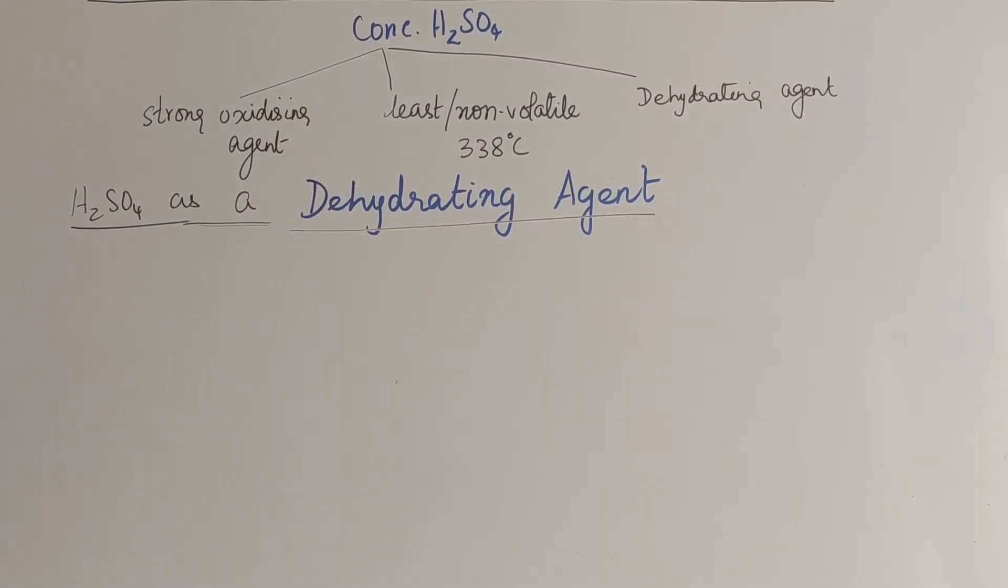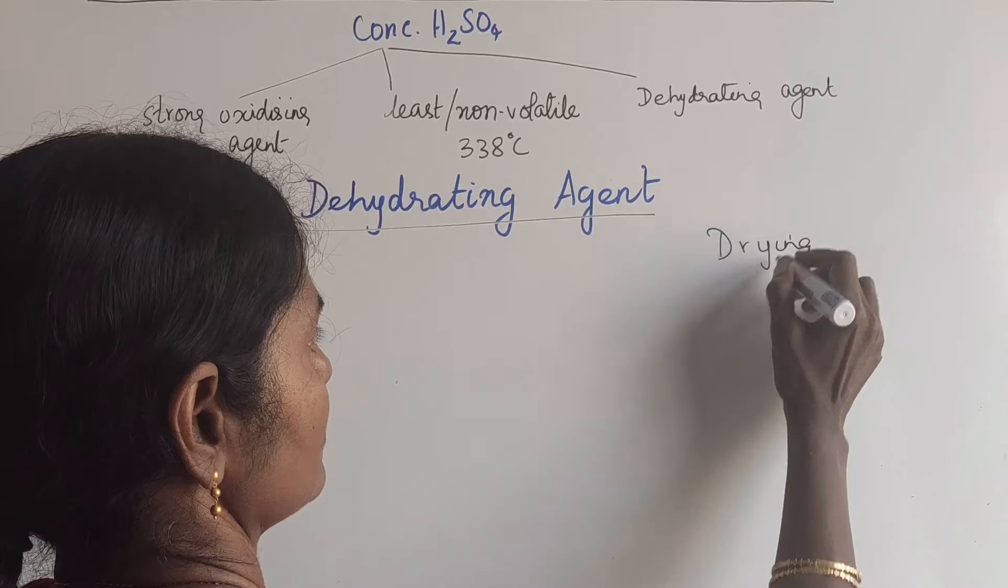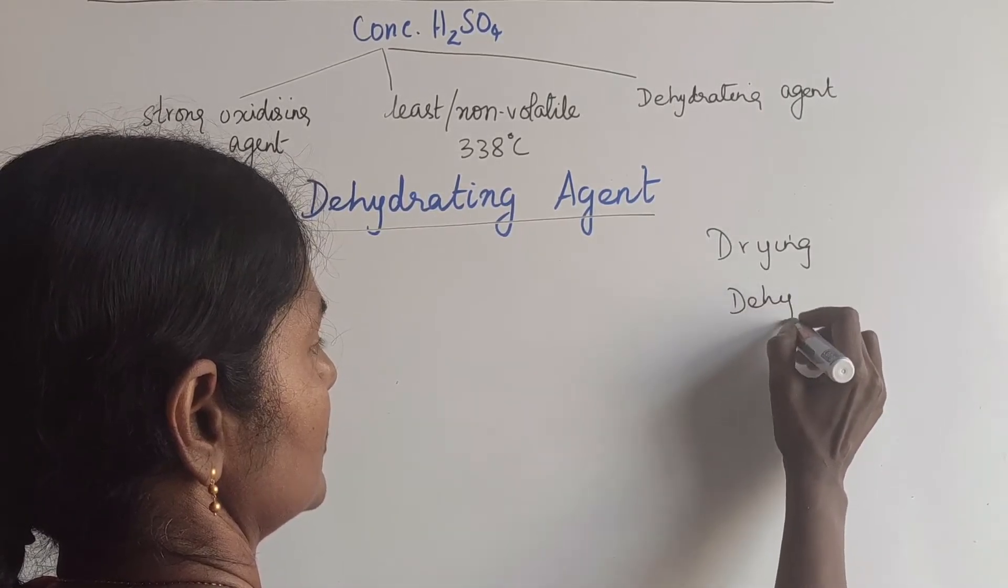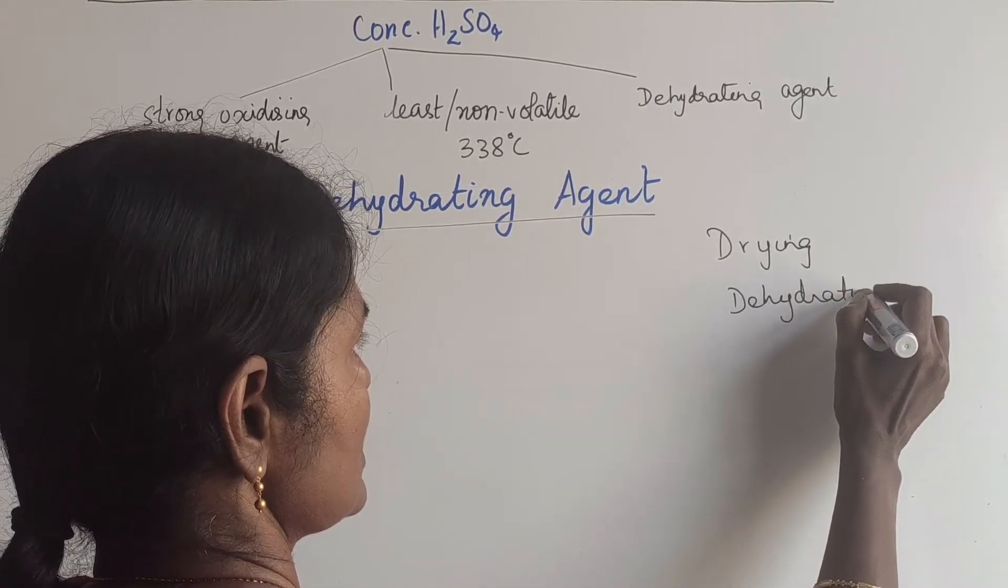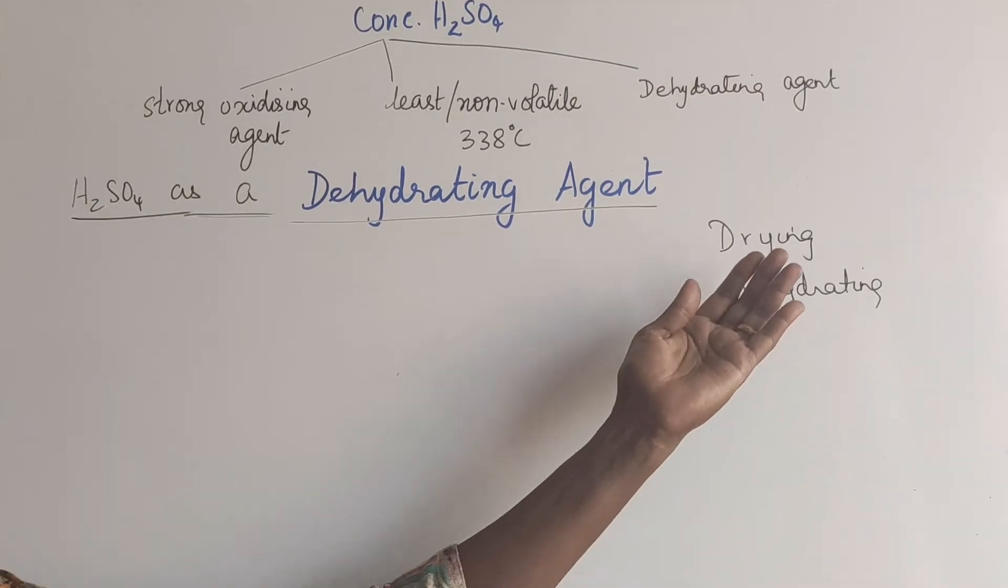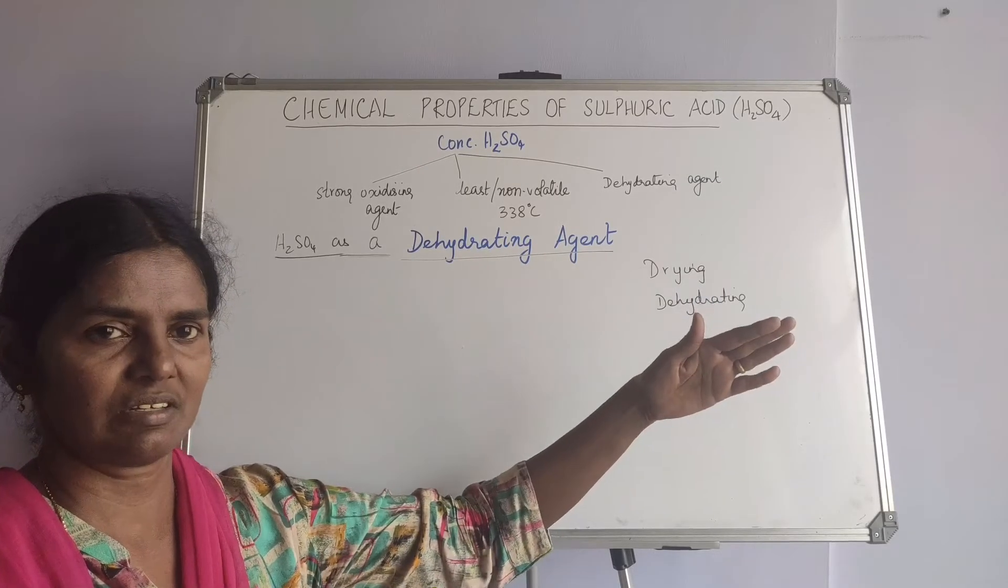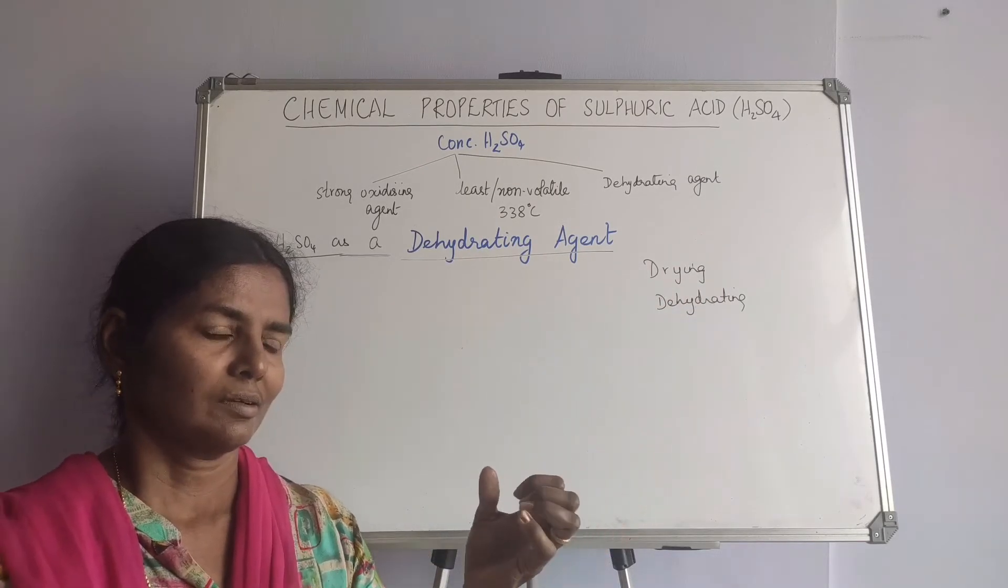Now what is the difference between drying and dehydrating? Sulfuric acid can act as a drying agent as well as a dehydrating agent. But the fact that it is a drying agent is something on the superficial.